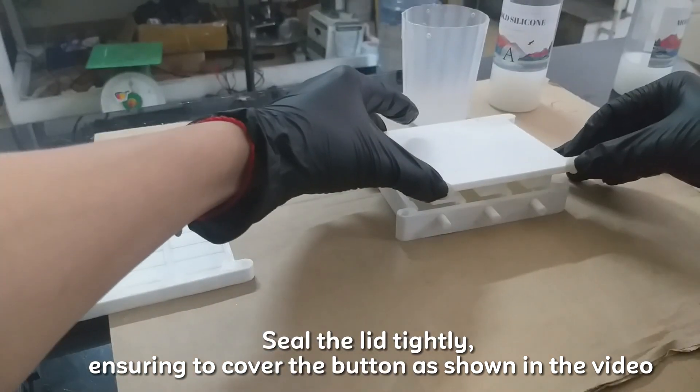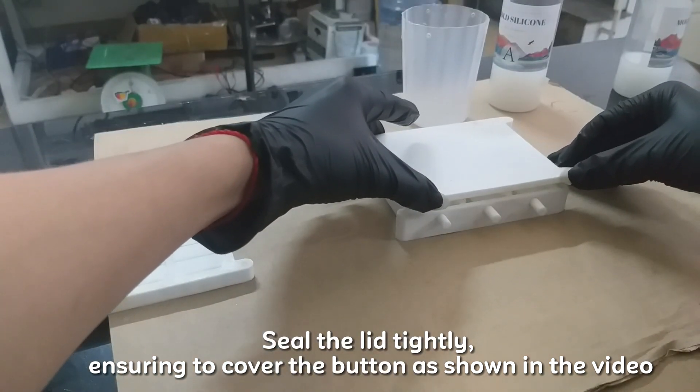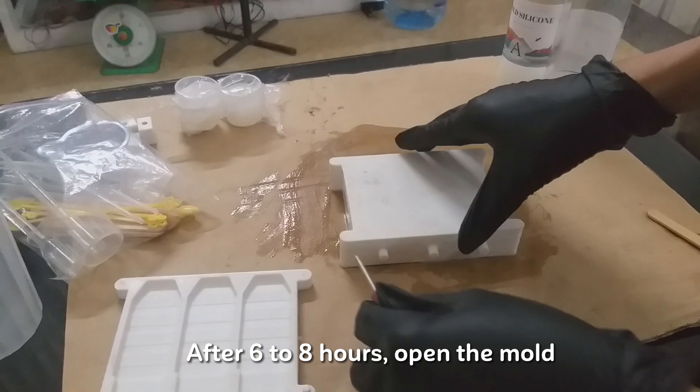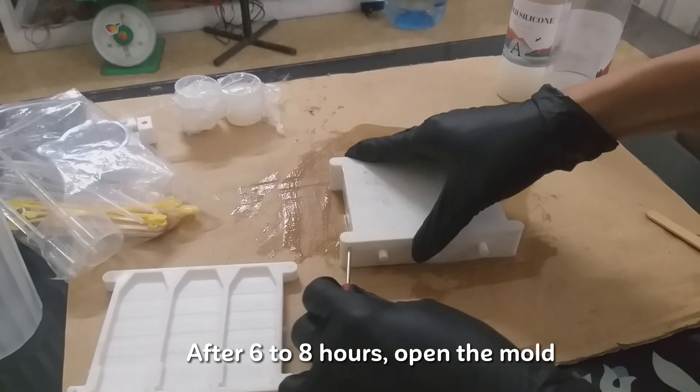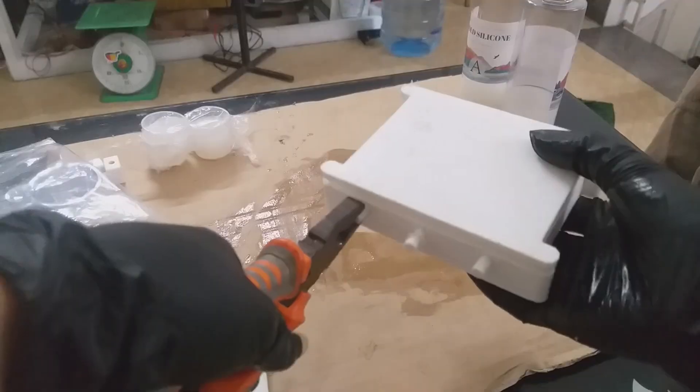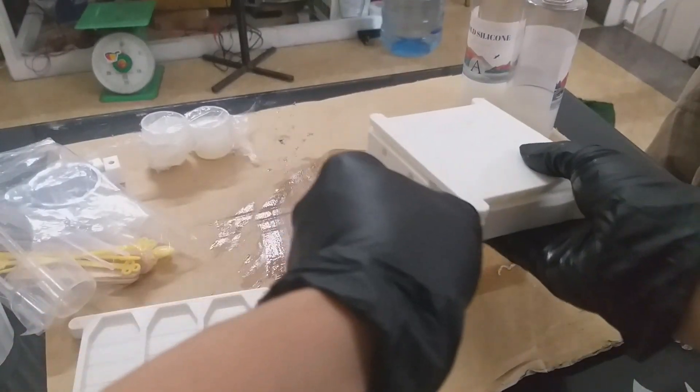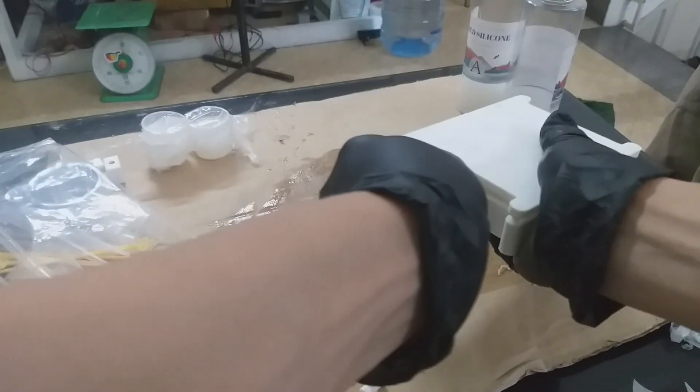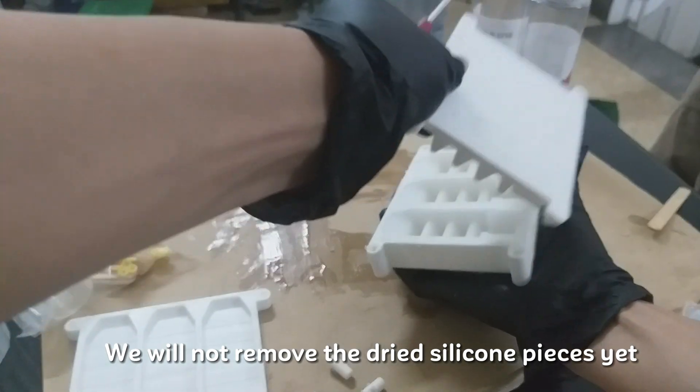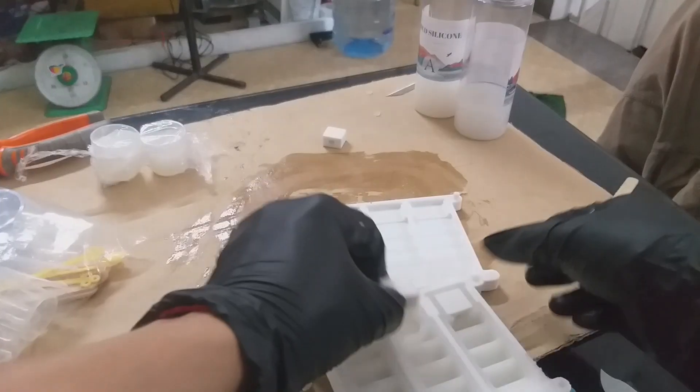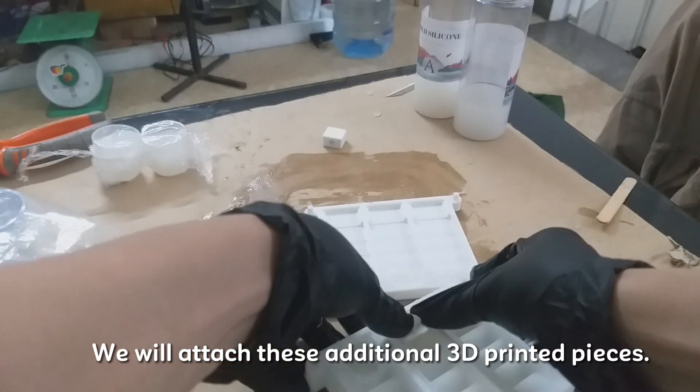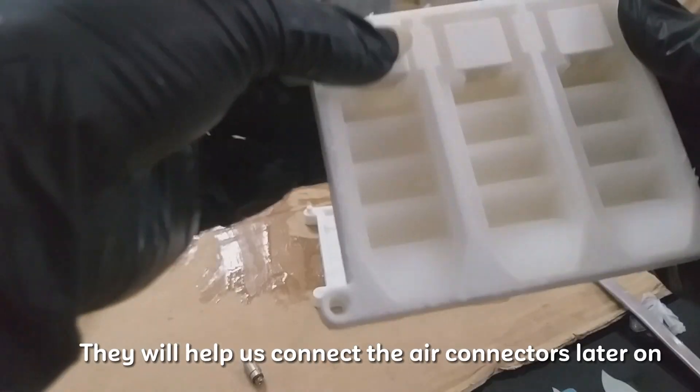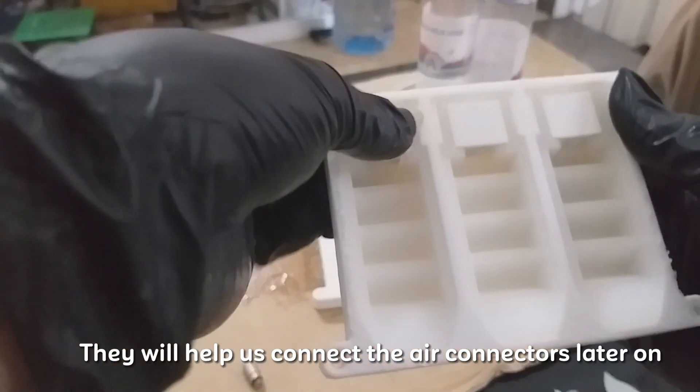Now, pour the silicone mixture into the mold cavity. Seal the lid tightly, ensuring to cover the button as shown in the video. After 6 to 8 hours, open the mold. We will not remove the dried silicone pieces yet. We will attach these additional 3D printed pieces. They will help us connect the air connectors later on.